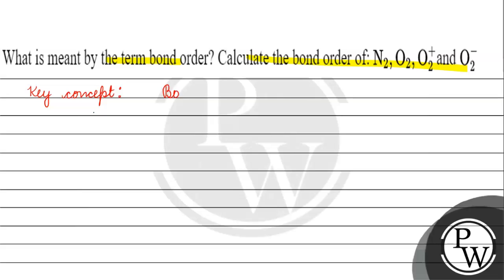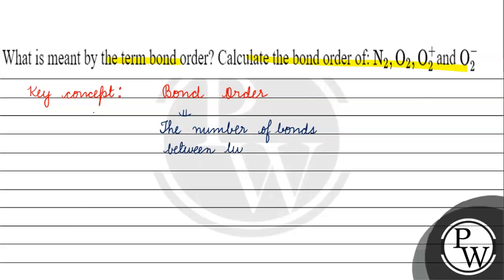What is bond order? Bond order is basically the number of bonds between two atoms — the number of bonds between two atoms. That is what bond order is.